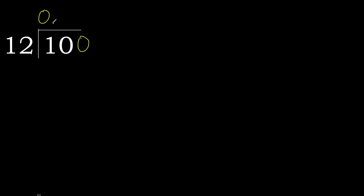0 point. 0 point — 100. 12 multiplied by which number is nearest to 100 but not greater? 12 multiply by 9 is greater. Multiply by 8: 96 is not greater.